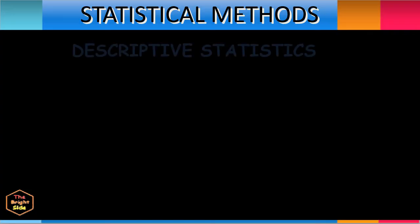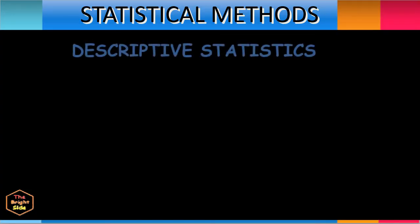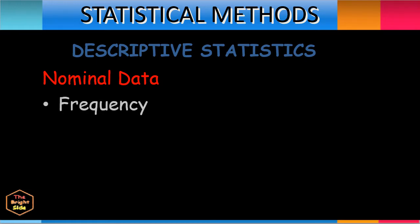The descriptive statistical tests applicable for nominal data include frequency, which measures the number of occurrences of each nominal data value of the variable, and mode, which is a type of descriptive statistic that researchers use to determine the most frequently occurring value of a variable in a data set.